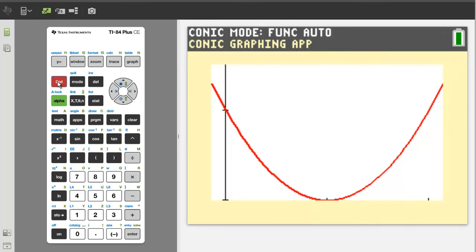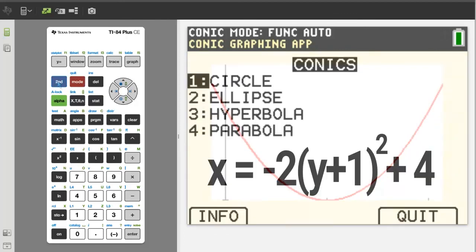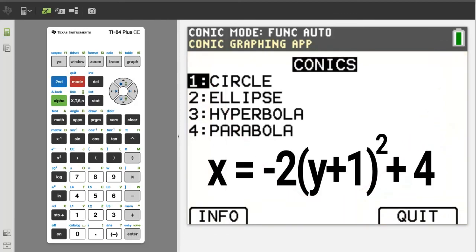You cannot adjust it and does not give much information except to indicate that the parabola opens upward. So if you want more flexibility use the y equals button to graph a parabola. But, if you have the equation like this, x equals negative 2 times y plus 1 squared plus 4, and you cannot use the y equals button because we have an x equals equation, then you need to use the conics app to graph it.